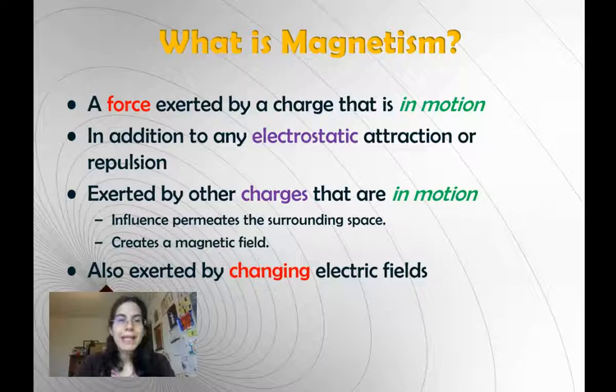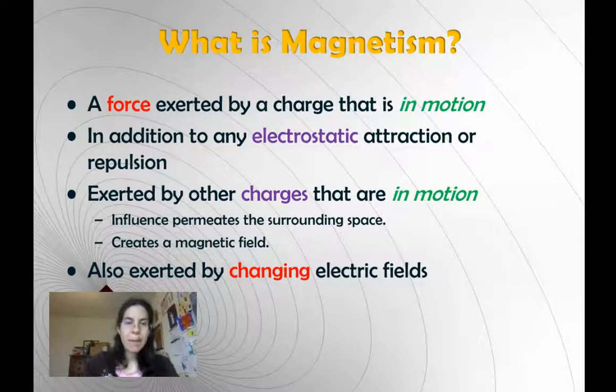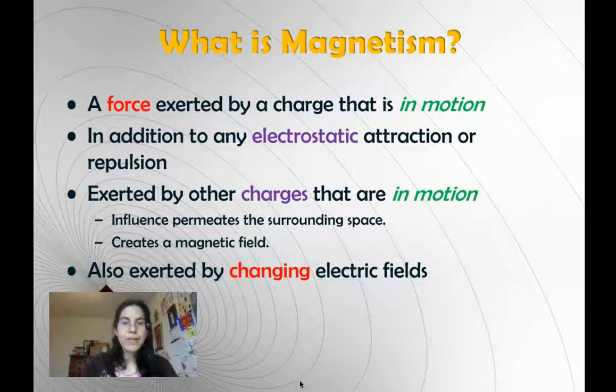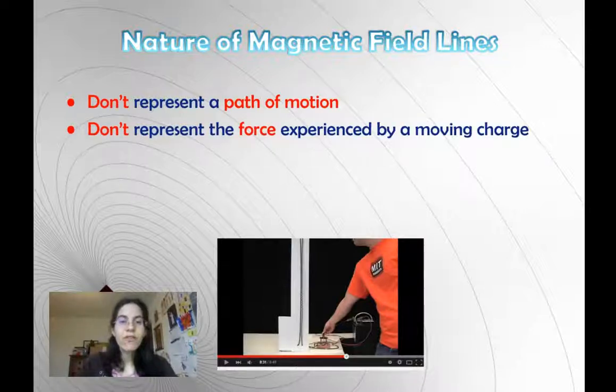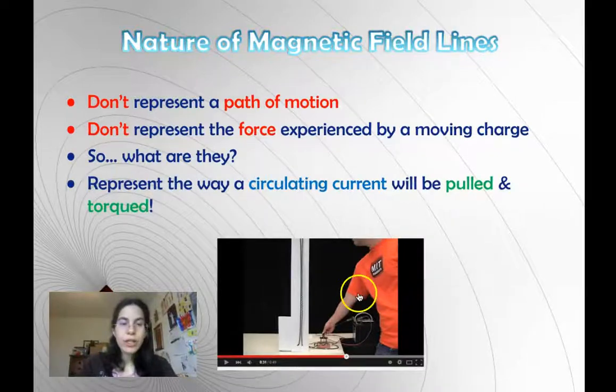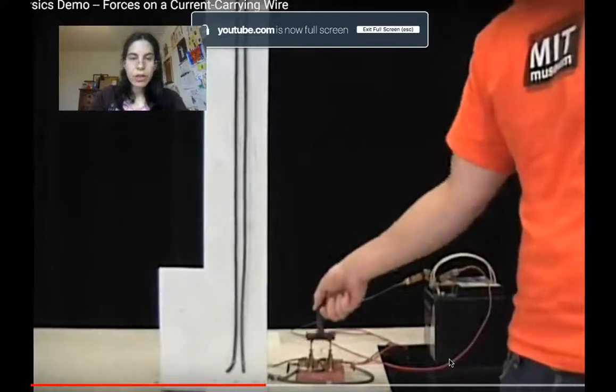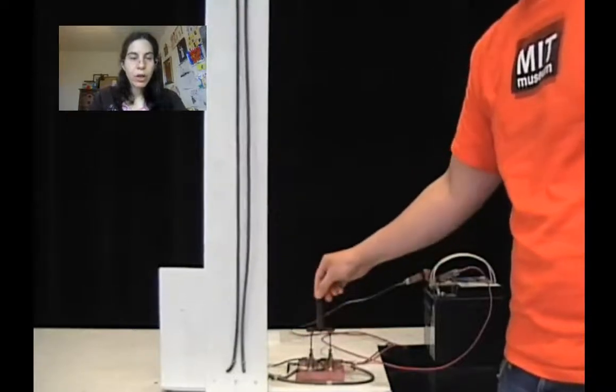Magnetism is a force exerted by a moving charge. That is to say, changing electric fields create magnetic fields. Magnetism is totally different from electricity. It is in addition to any positive and negative attract repel. It's exerted by other charges that are in motion. The magnetic field permeates through space the same way the electric field does. The magnetic field flows perpendicular to the electric field. Magnetic field lines don't represent a path of motion. And they don't represent the force experienced by a moving charge. So, what are they? They represent the way a circulating current will be torqued. Check it out. Here's a series circuit. Here's the battery. Here's the switch. Whoa! See how those wires repel each other? Send the current the other way, they attract. Current one way, repel. Current the other way, attract.